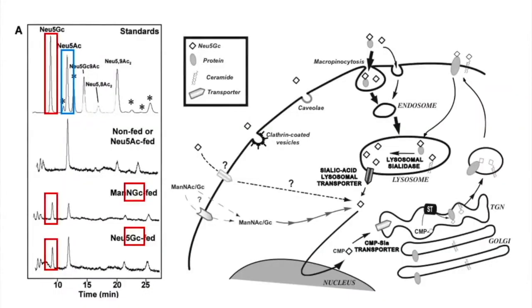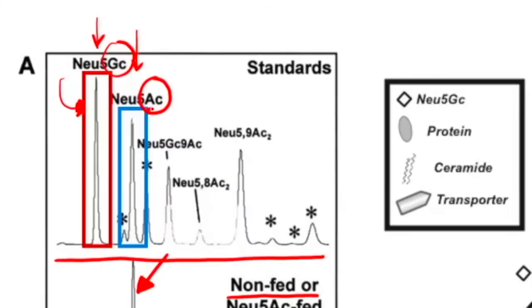And what they showed is that here they have something called high-performance liquid chromatography. They can put the sample into a chromatograph and see when the different peaks come off. And AC here is in blue, that's what we normally see in humans, and GC here is in red. And so we can see here that a non-fed or just a NU5AC-fed human is going to have a spike here with AC.